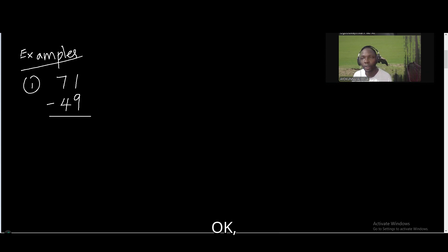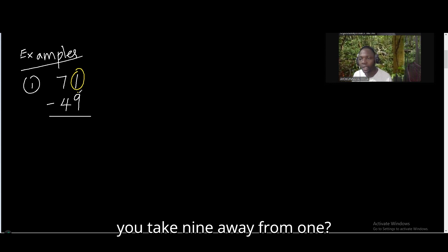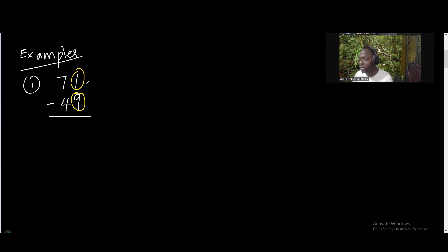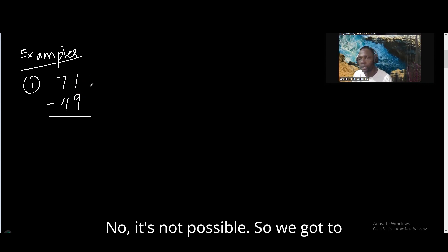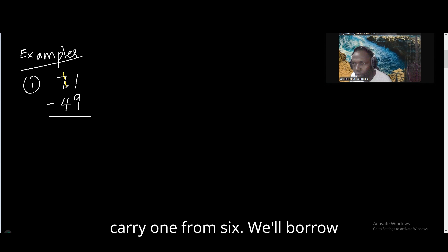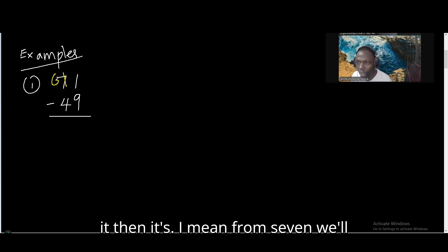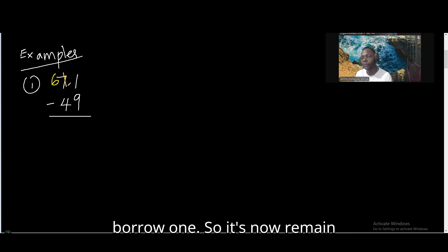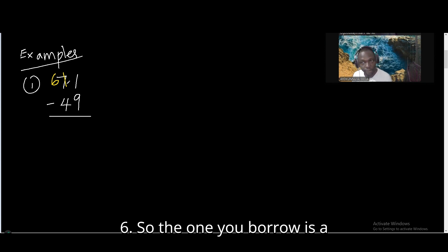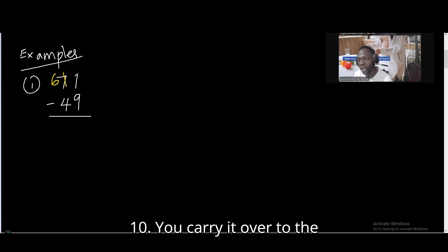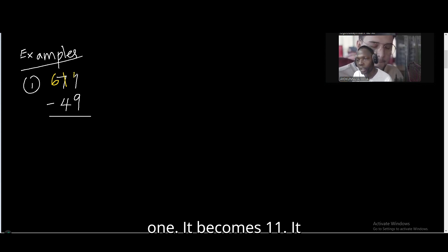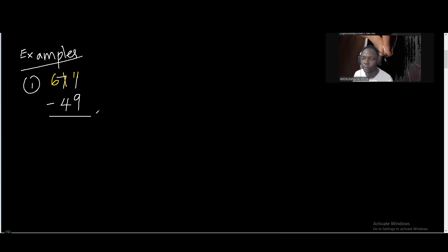Now, look at 1. Can you take 9 away from 1? No, it's not possible. So we're going to carry 1 from 7. We'll borrow 1. So it will now remain 6. So the 1 you borrow is a 10. You carry it over to the 1. It becomes 11.